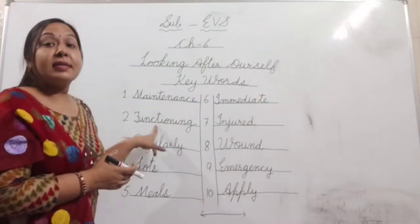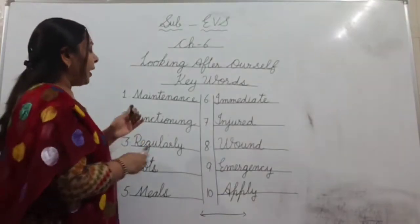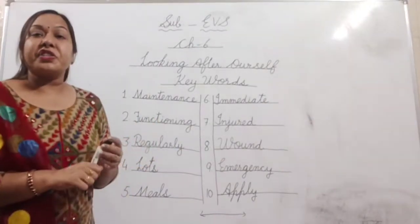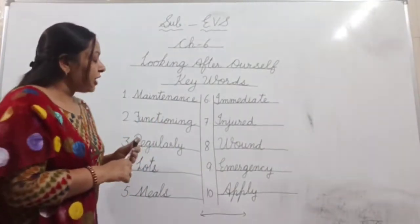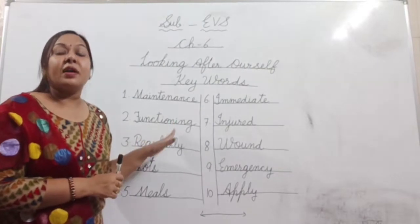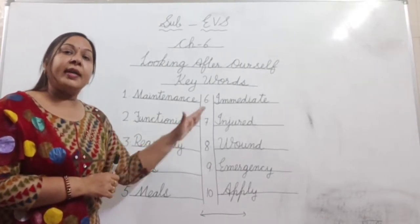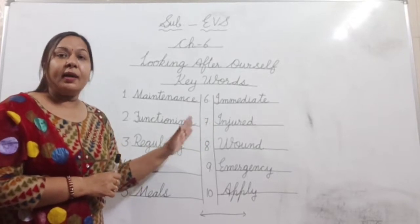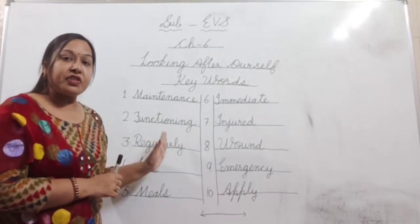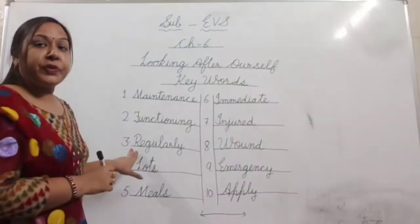Number two: f-u-n-c-t-i-o-n-i-n-g — it's functioning. Functioning means perform karna ya work karna. Properly work karna ya perform karna means kaam karna. Functioning means work or kaam.